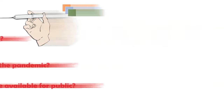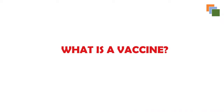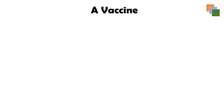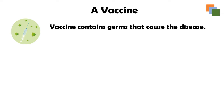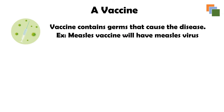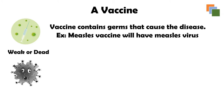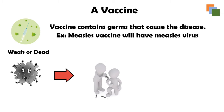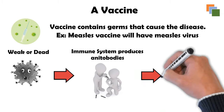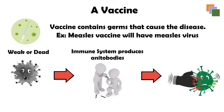A vaccine contains germs that cause the disease. For example, a measles vaccine will have the measles virus. However, this virus in a vaccine is usually a dead or weakened one. When given to a person, it helps their immune system produce the necessary antibodies. These antibodies fight against the virus and make the person immune to the disease without them actually getting it, so when the person encounters the real disease, the antibodies destroy it.